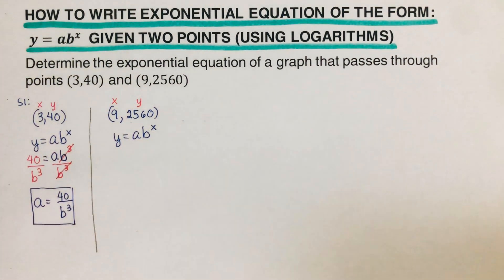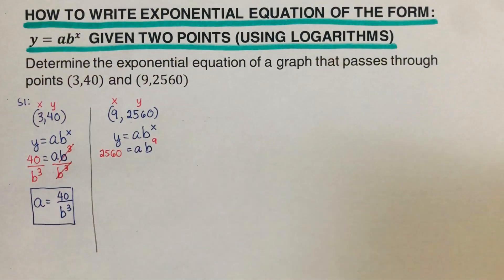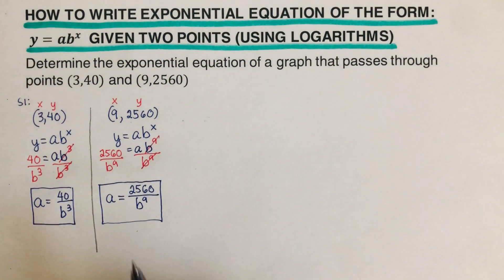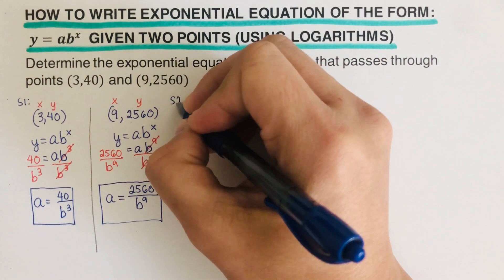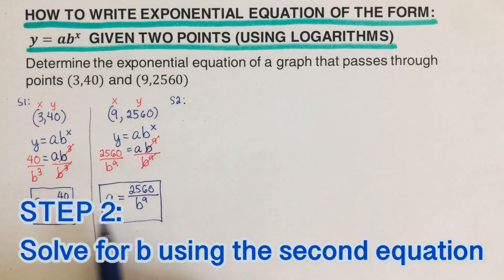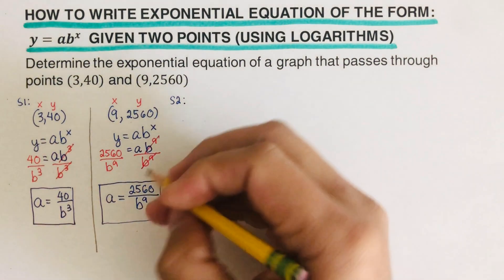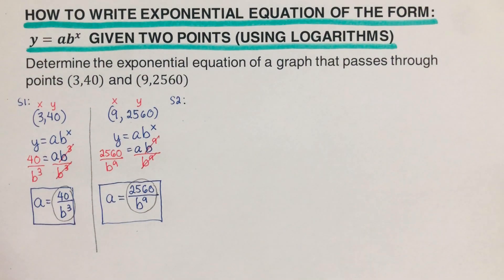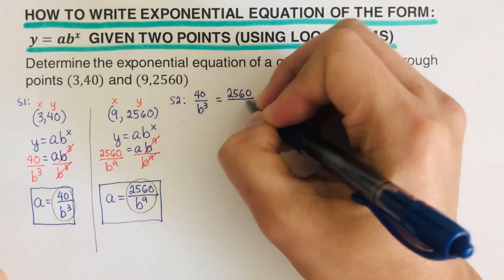Now let's move on to the second equation using the second point (9, 2560). Plugging those values in gives us 2560 equals a times b to the ninth, and isolating a gives a equals 2560 over b to the ninth. Since both equations are equal to a, we can use the equal values method — that means 2560 over b to the ninth equals 40 over b to the third.